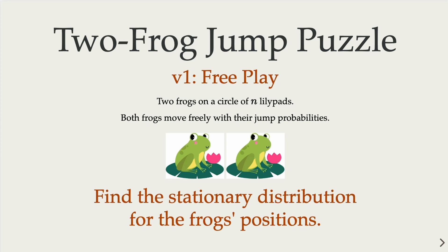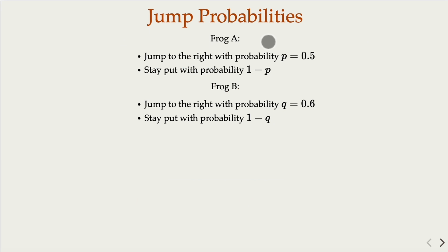Today, we're going to look at the setup with two frogs with some parameters. Like frog A would jump to the right with probability p equal 0.5, or stay put with probability 1 minus p at each time epoch. For example, every one minute, they will make the move with this given probability.